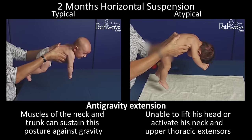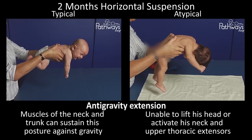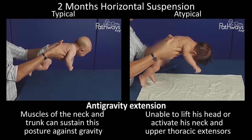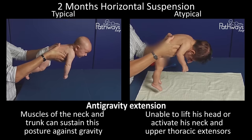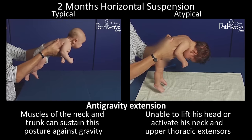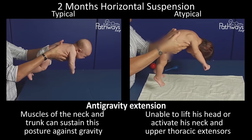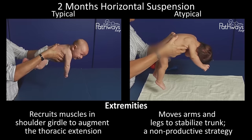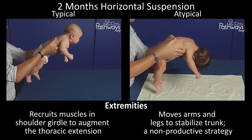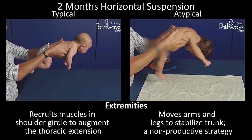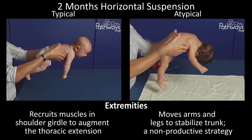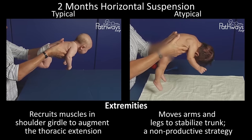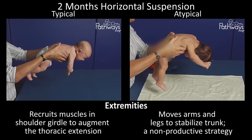Position 6 – Horizontal Suspension – Antigravity Extension. In this position, the typically developing baby's muscles of the neck and trunk can sustain this posture against gravity. The atypically developing baby is unable to lift his head or activate his neck and upper thoracic extensors. The typically developing baby recruits muscles in the shoulder girdle to augment thoracic extension, while the atypically developing baby moves his arms and legs to stabilize his trunk, which is a non-productive strategy.